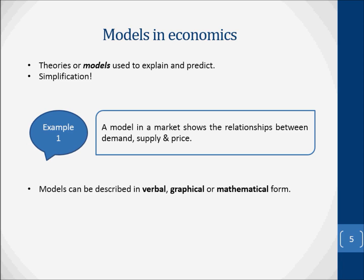As an astronomer, for example, constructs models of planetary movements to explain why planets are in the position they are and to predict their position in the future. In order to explain and predict, the economist constructs models which show simplified relationships between various economic phenomena. For example, a model of a market shows the relationships between demand, supply, and price. Although most models can be described verbally, they can normally be represented more precisely in graphical or mathematical form.